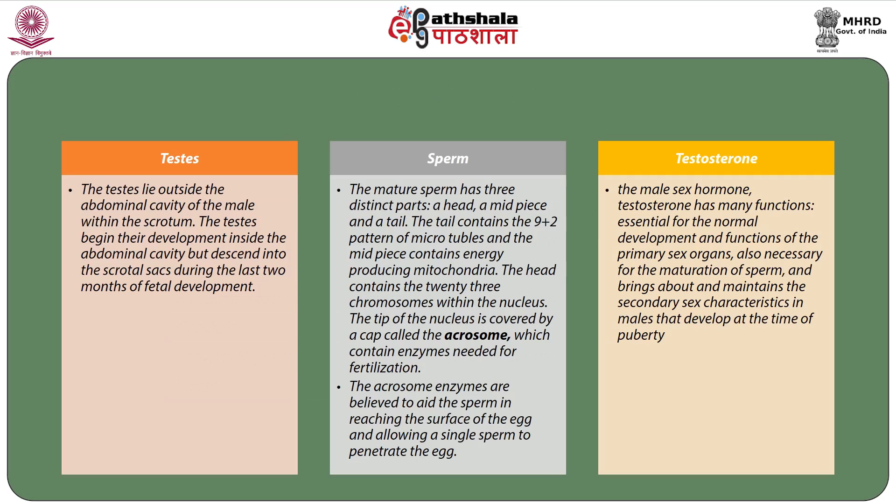The mature sperm has three distinct parts: a head, a midpiece, and a tail. The tail contains the 9+2 pattern of microtubules, and the midpiece contains energy-producing mitochondria. The head contains 23 chromosomes within the nucleus. The tip of the nucleus is covered by a cap called the acrosome, which contains enzymes needed for fertilization. The acrosome enzymes are believed to aid the sperm in reaching the surface of the egg and allowing a single sperm to penetrate the egg.